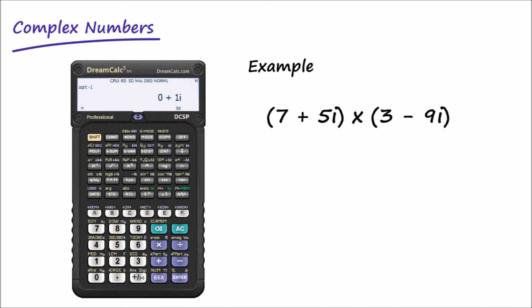So here we have the product 7 plus 5i multiplied by 3 minus 9i.